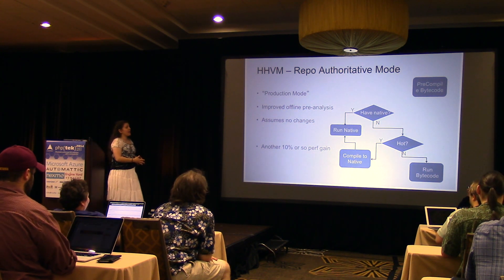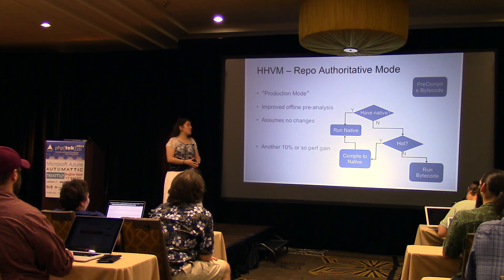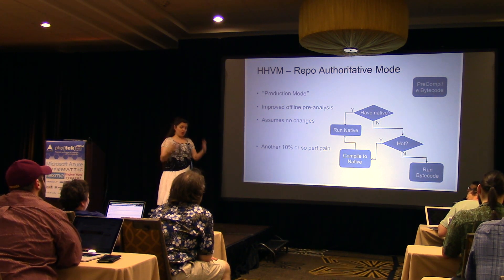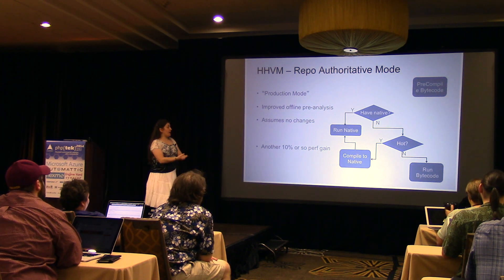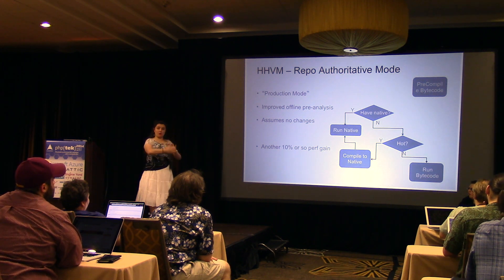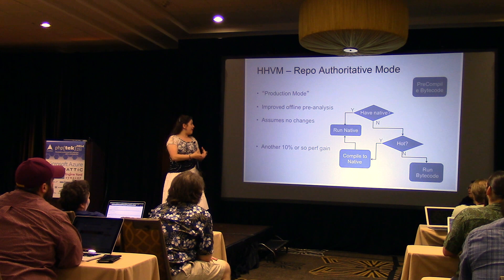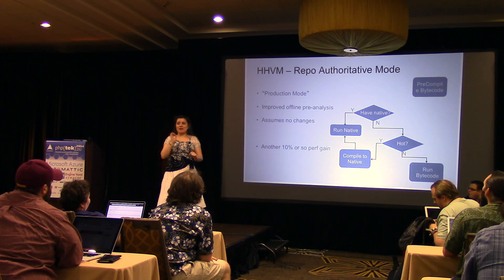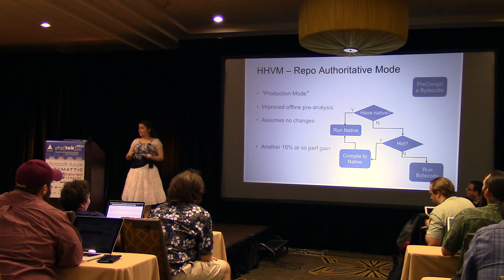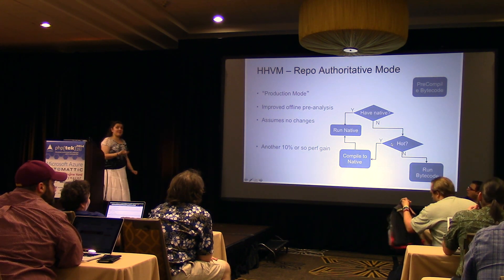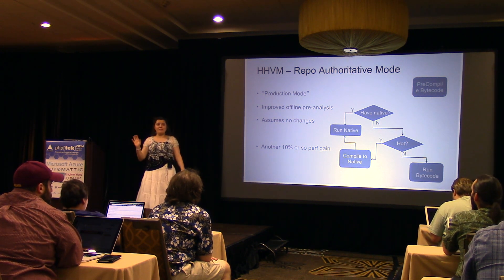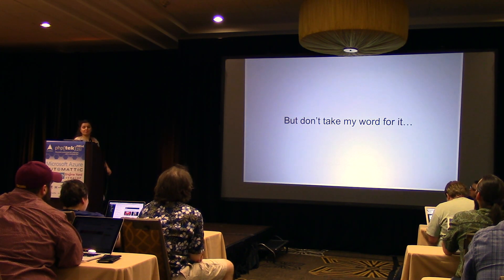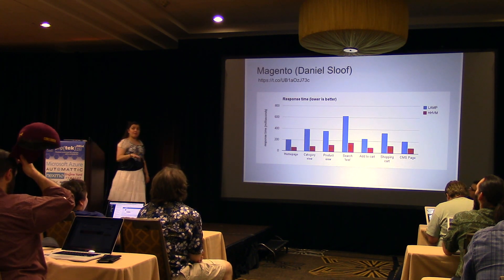Then we have repo authoritative mode — also what you use for production. This takes the code you know you're putting into production, compiles it down, does better analysis to find the parts that can really be optimized, and writes them out. It assumes no changes are made, so if you make changes this isn't going to work well. This really speeds things up. Benchmarks and statistics are damn lies all over the place, but here are a few you can run for yourself and make your own decisions.